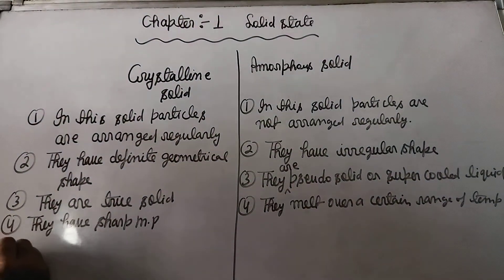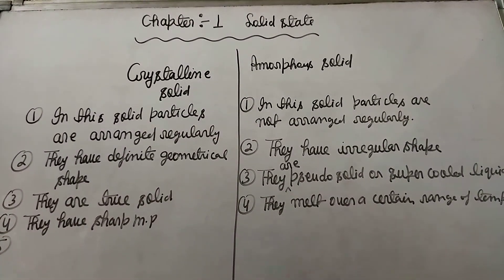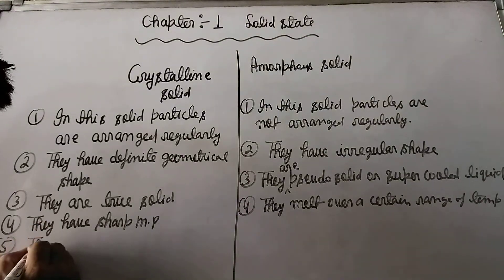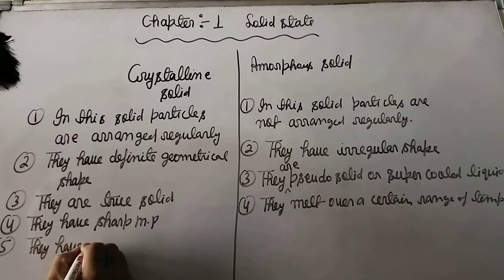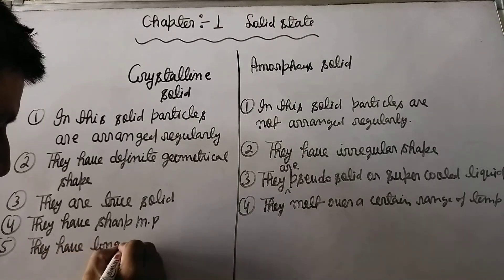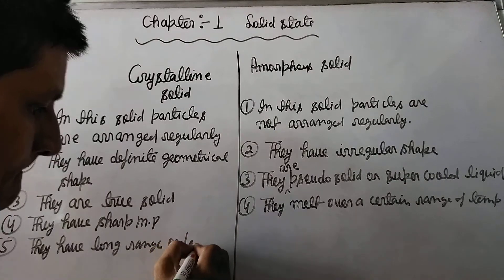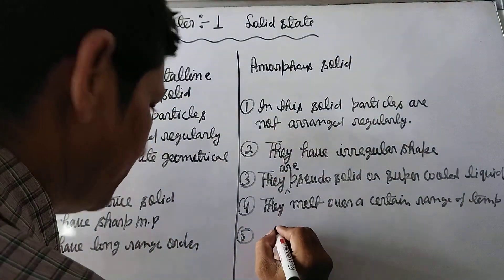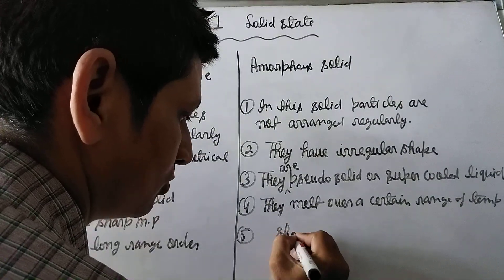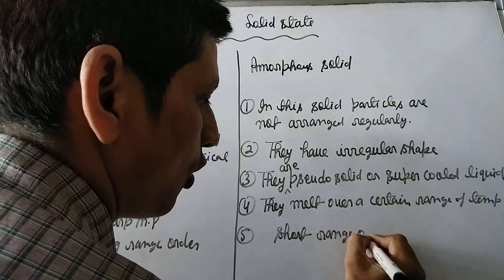Property 5: Crystalline solids contain long range order. Amorphous solids contain short range order.